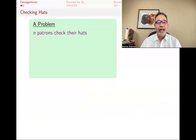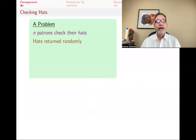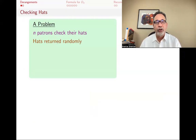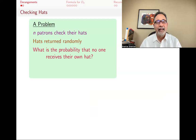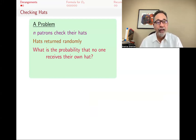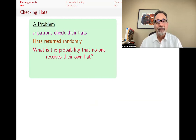You have N people that check their hats. They go to a museum, they go someplace, and they all check their hats. When they return, the hats are returned randomly. The clerk that was working there loses all the information and just passes out hats to everyone randomly. And the question is: what's the probability that no one gets their own hat?